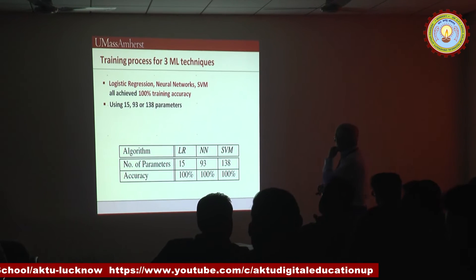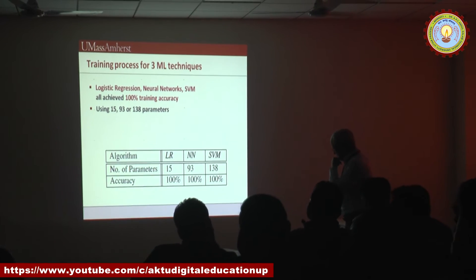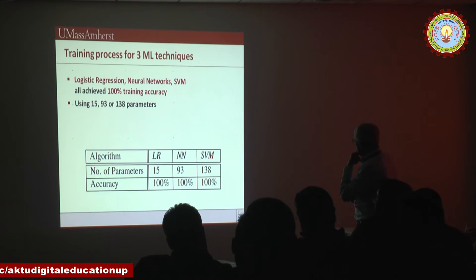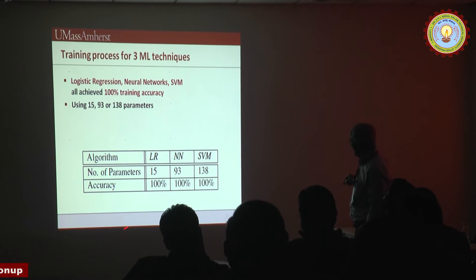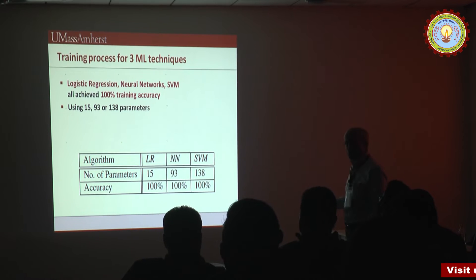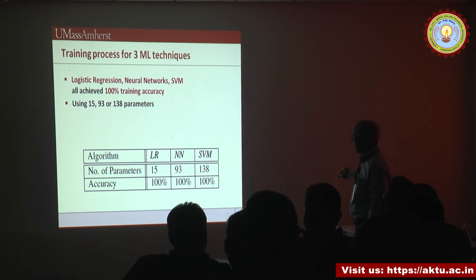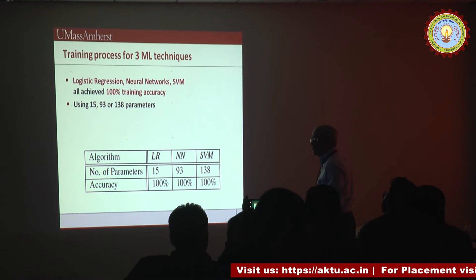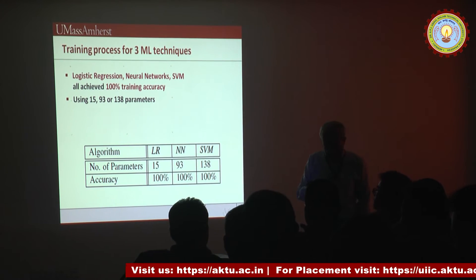We attempted to use the same three classification algorithms: logistic regression, neural net, and SVM. Here we have a much better situation — all of them achieve 100% precision, which means we can use the one with the smallest number of parameters that runs much faster.